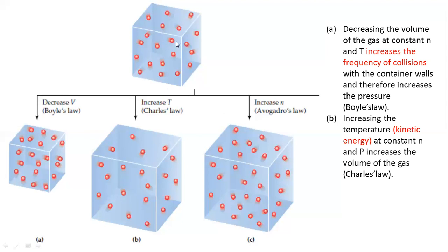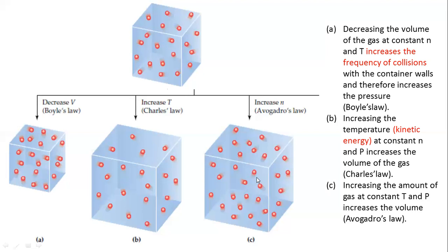For Avogadro's Law, there is an increase in volume by increasing the number of moles. In this case, you increase the number of moles while keeping temperature and pressure constant, and the volume of the gas increases. This is the explanation given through the kinetic molecular theory — explaining all three laws: Boyle's Law, Charles' Law, and Avogadro's Law. This is all for today's lecture.